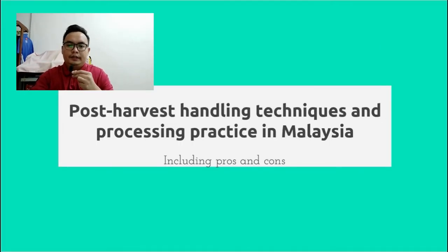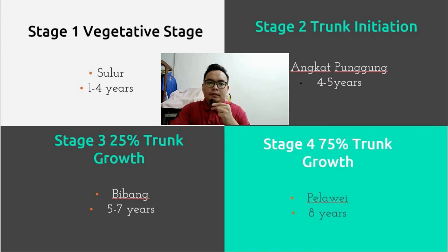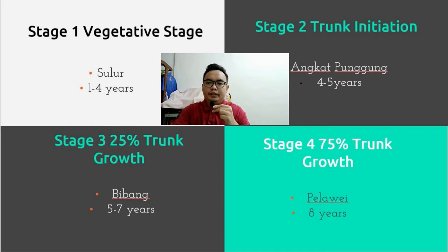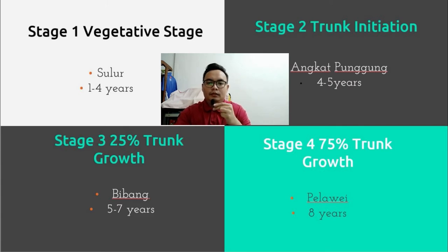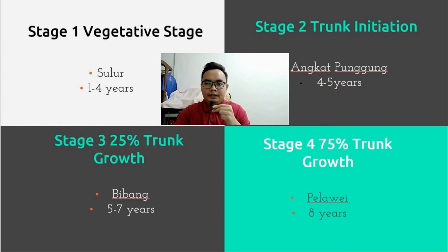Second: post-harvest handling techniques and processing practice in Malaysia, including pros and cons. Sago palm has nine growth stages. Stage 1 is the vegetative stage, locally known as Sulur, at age one to four years. Stage 2 is trunk initiation, locally known as Angkat Punggong, at age four to five years. Stage 3 is 25% of trunk growth, locally known as Bibang, at age five to seven years. Stage 4 is 75% of trunk growth, or Pelawi, at about eight years.